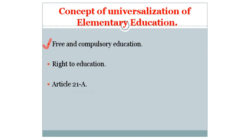The 86th Constitutional Amendment carried out in 2002 added a new Article 21A in Right to Freedom. Article 21A relates to Right to Education, which reads that the government shall provide free and compulsory education to all children from the age of 6 to 14 in such a manner as the state may by law determine. Now all the states are providing free and compulsory education to all children from the age of 6 to 14 years.